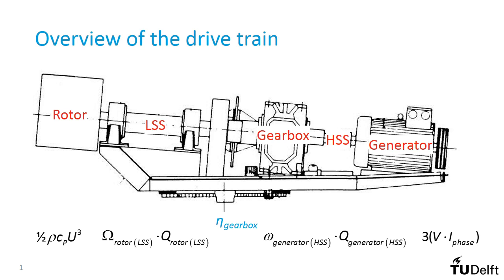For the analysis of the behavior of the drivetrain, we will focus on the low-speed shaft and on the high-speed shaft, for which the power is determined by their rotational speed and torque. Their inputs come from the rotor and generator respectively, and they connect through the gearbox. Therefore, we'll also look at the efficiency of the gearbox and how the gearbox changes speed and torque.